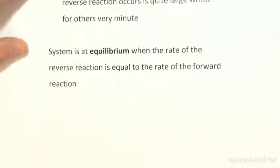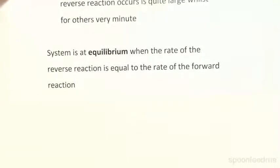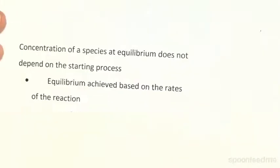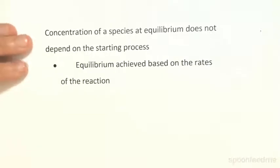We can say that a system has reached equilibrium when the rate of the reverse reaction is equal to the rate of the forward reaction. Sometimes people get confused and think that a system is at equilibrium when the concentrations of the reactants and the products are the same — that isn't the case. It's the rate of the forward and the reverse reactions that matter.